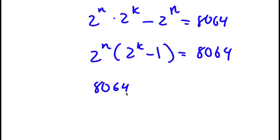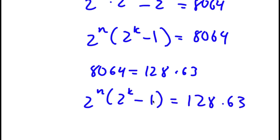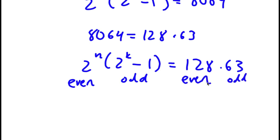Now, 8,064 is simply equal to 128 times 63. So I have 2 to the power of n times 2 to the power of k minus 1, equals 128 times 63. Notice that 2 to the power of n is even, and 2 to the power of k minus 1 is odd, because 2 to the power of k is even and an even number minus 1 is odd. And 128 is even, while 63 is odd. So I can set the even factors equal to each other and the odd factors equal to each other.